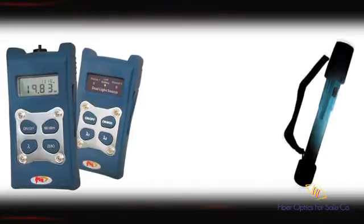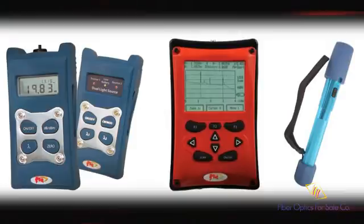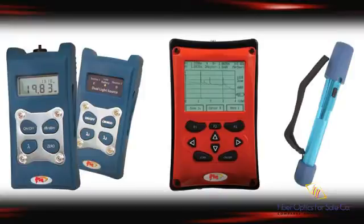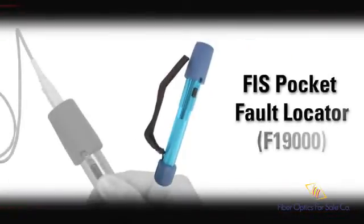For the best results, you may optimize your connection using either a light source and power meter, a visual fault locator, or an OTDR. When using any of these items to help optimize your connection, you must use a reference cord of the same type of fiber as the one you are terminating. In this video, we are going to use the FIS pocket fault locator.